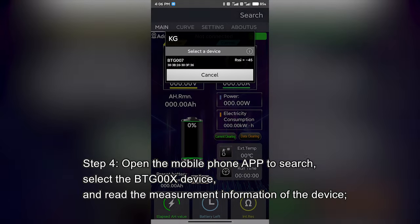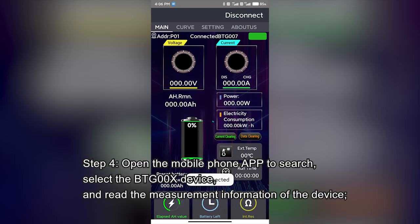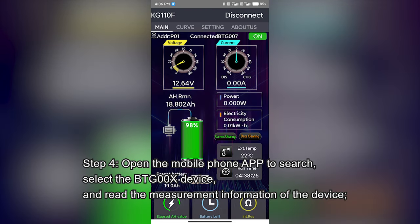Step 4: Open the mobile phone app to search, select the BTG-00X device, and read the measurement information of the device.